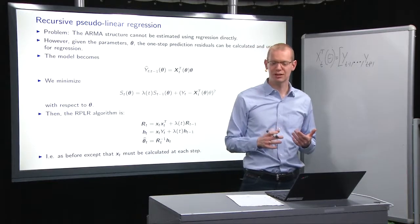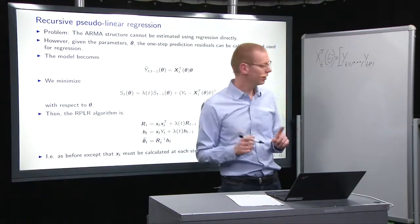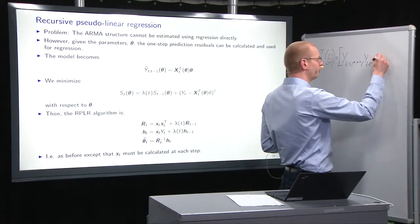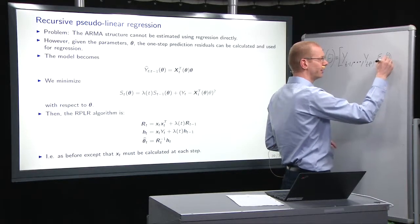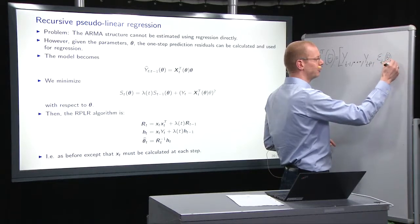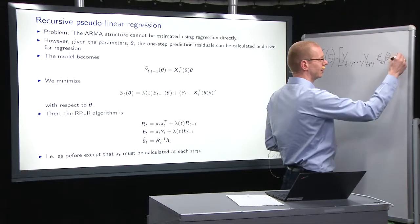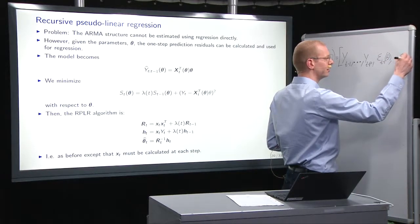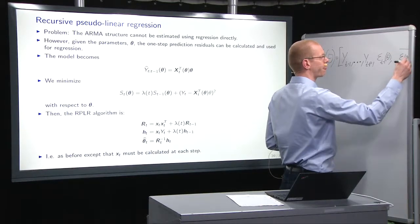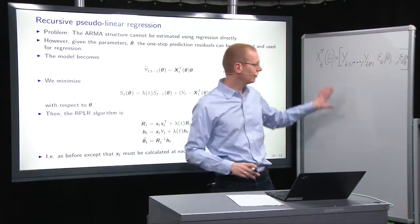Now, what we need is the epsilons. So, what we just said is that we can make an estimate of epsilon t minus 1 given a set of parameters. Likewise, we can do for all the previous epsilons down to epsilon t minus q. Again, it's a function of theta. So, that's the structure.